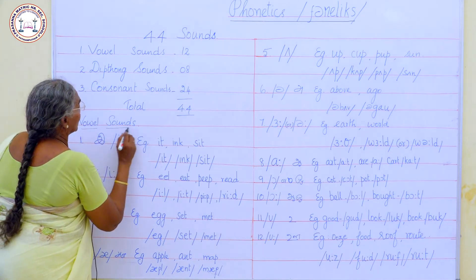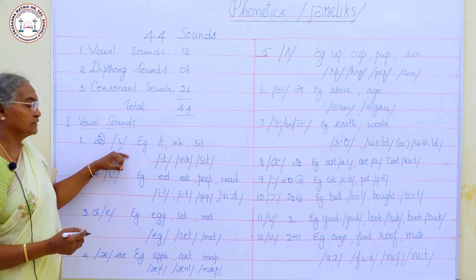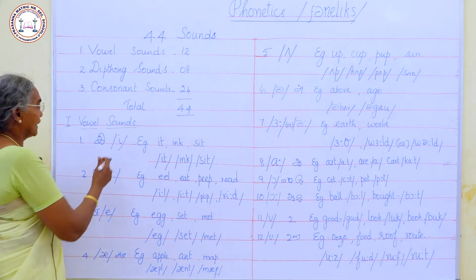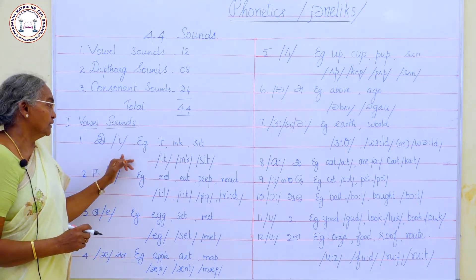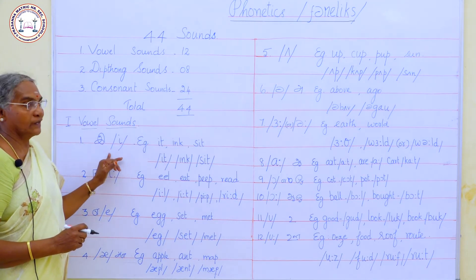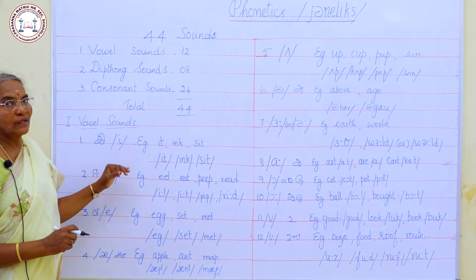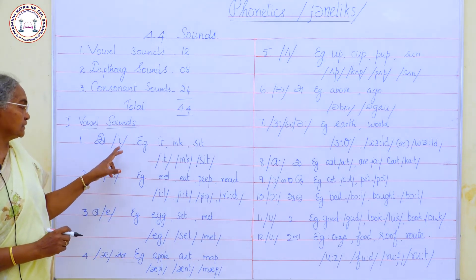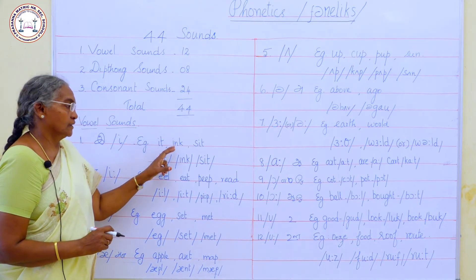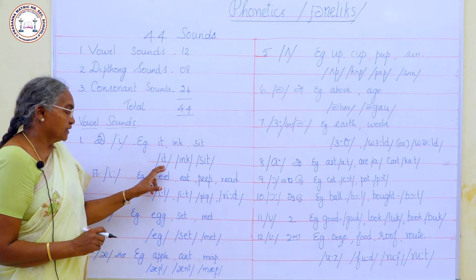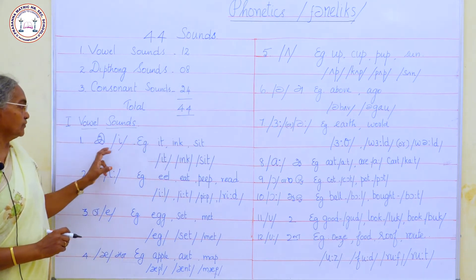The first vowel sound is the short 'ɪ' sound. Sound symbols are represented by slanting lines on either side, and each sound has its own symbol. The symbol for this sound is ɪ. Examples: it, ink, sit — all have the short 'ɪ' sound.